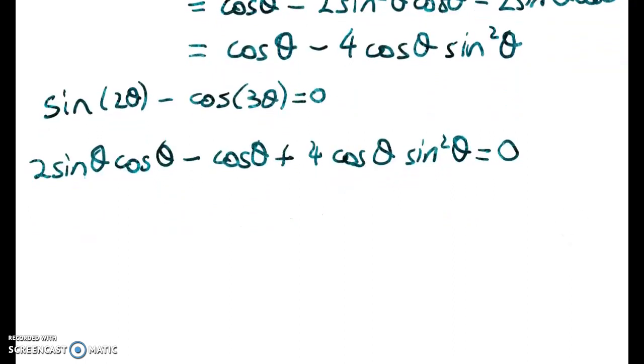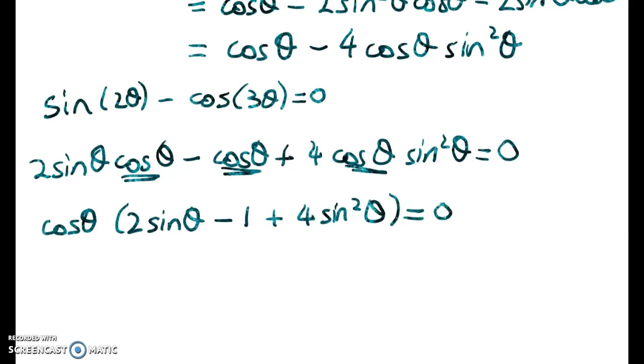Now to solve that, it's starting to look quite good. We've got a common factor coming through now of cos θ. We've got no double or triple angles in there anymore. So we can take out the common factor of cos θ. So cos θ times 2 sine θ minus 1 plus 4 sine squared θ is equal to 0.